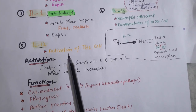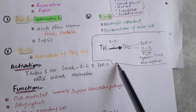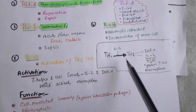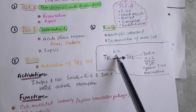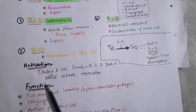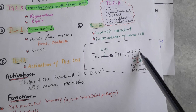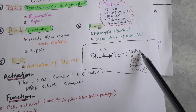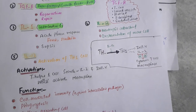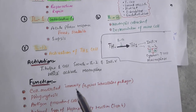Interleukin 12 helps in the activation of T helper 1 cells from naive T cells. Naive T cells can be converted into T helper 1 or T helper 2, but with interleukin 12 — secreted by macrophage — naive T cells convert into T helper 1 cells. T helper 1 cells secrete interferon gamma and interleukin 2, which then activate cytotoxic T cells and macrophage. So interferon gamma and interleukin 2 are the activators of macrophage.